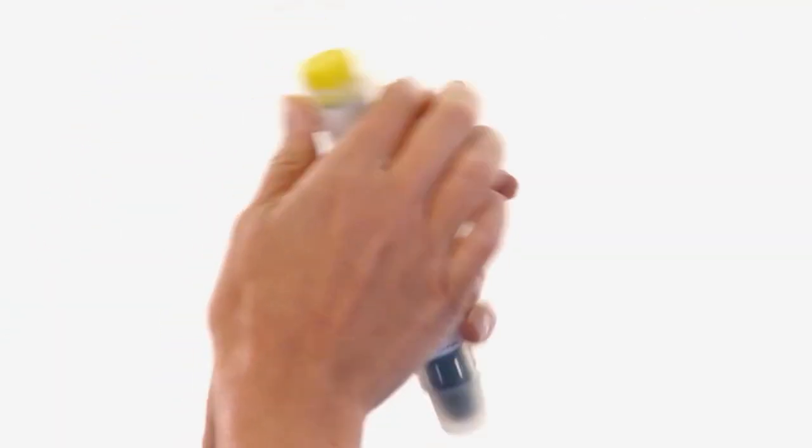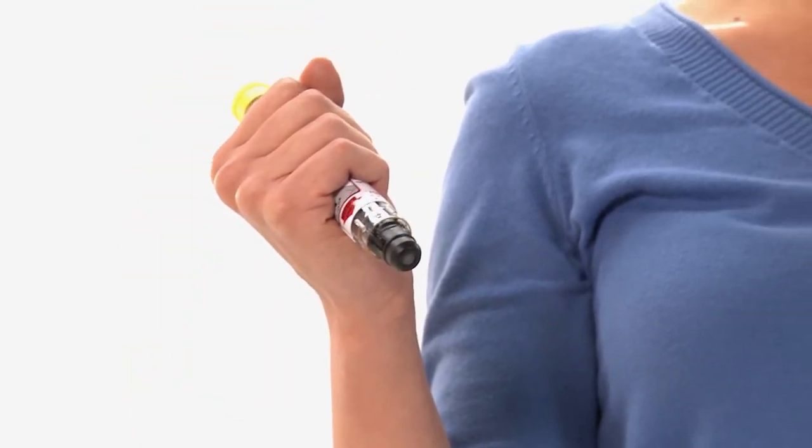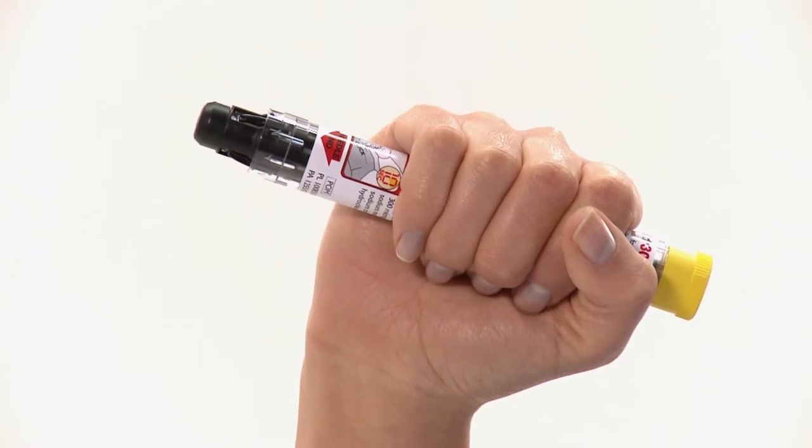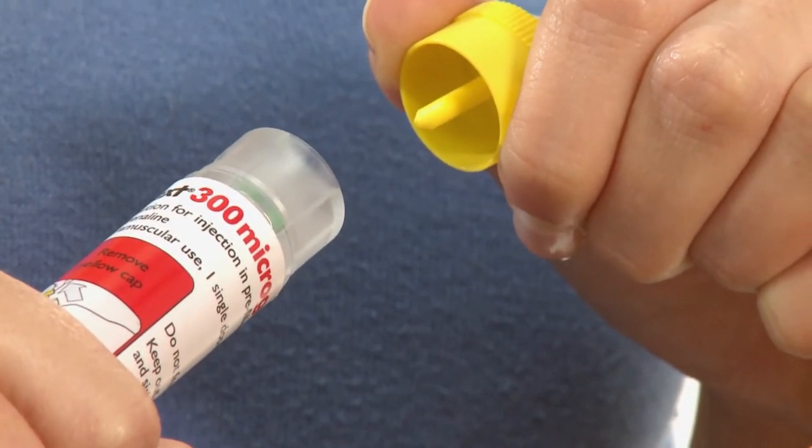You should remove your Jext from the flip-top case. Grasp the Jext in your dominant hand with your thumb closest to the yellow cap. Pull off the yellow cap with your other hand.